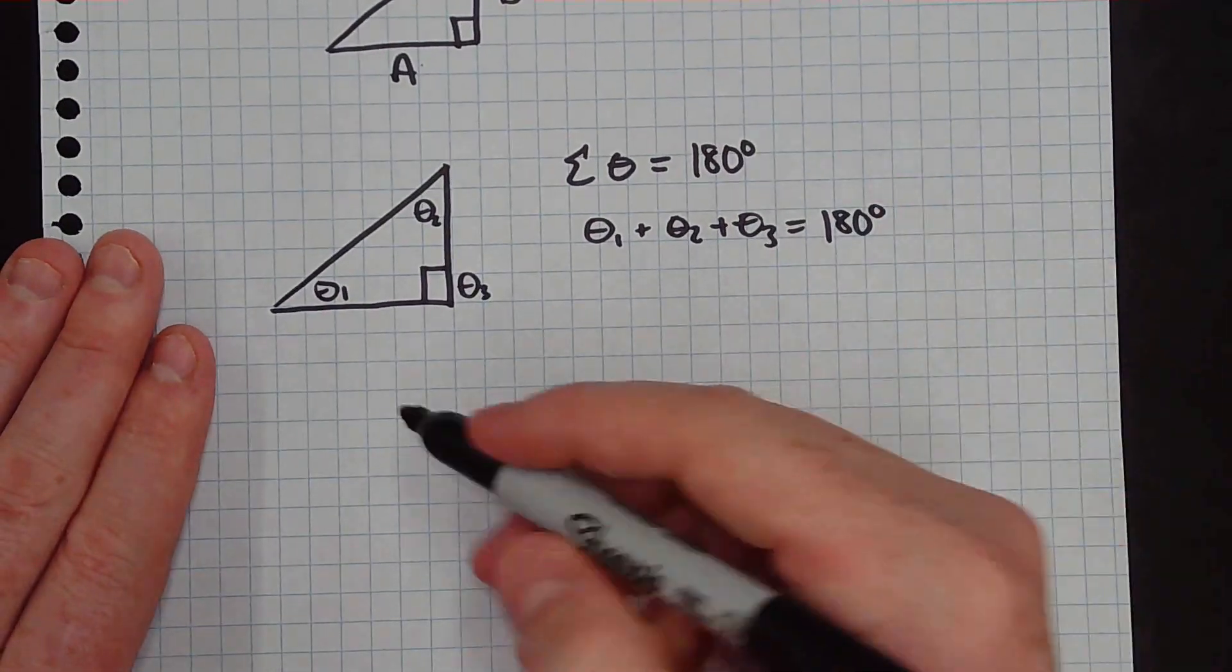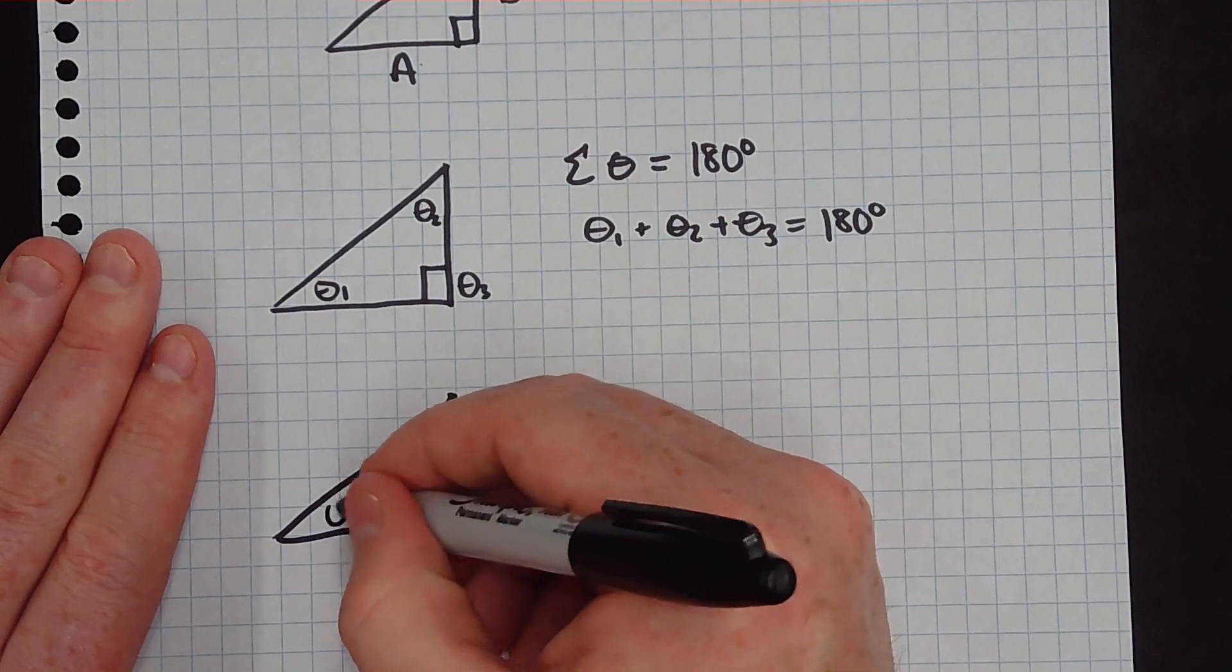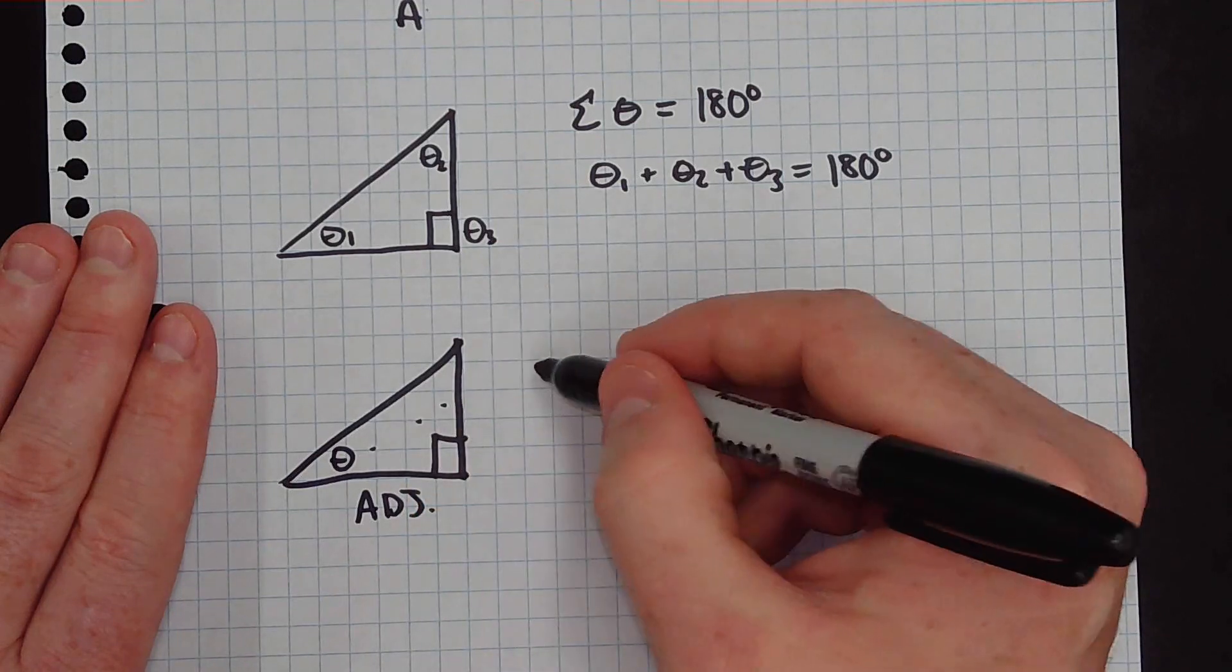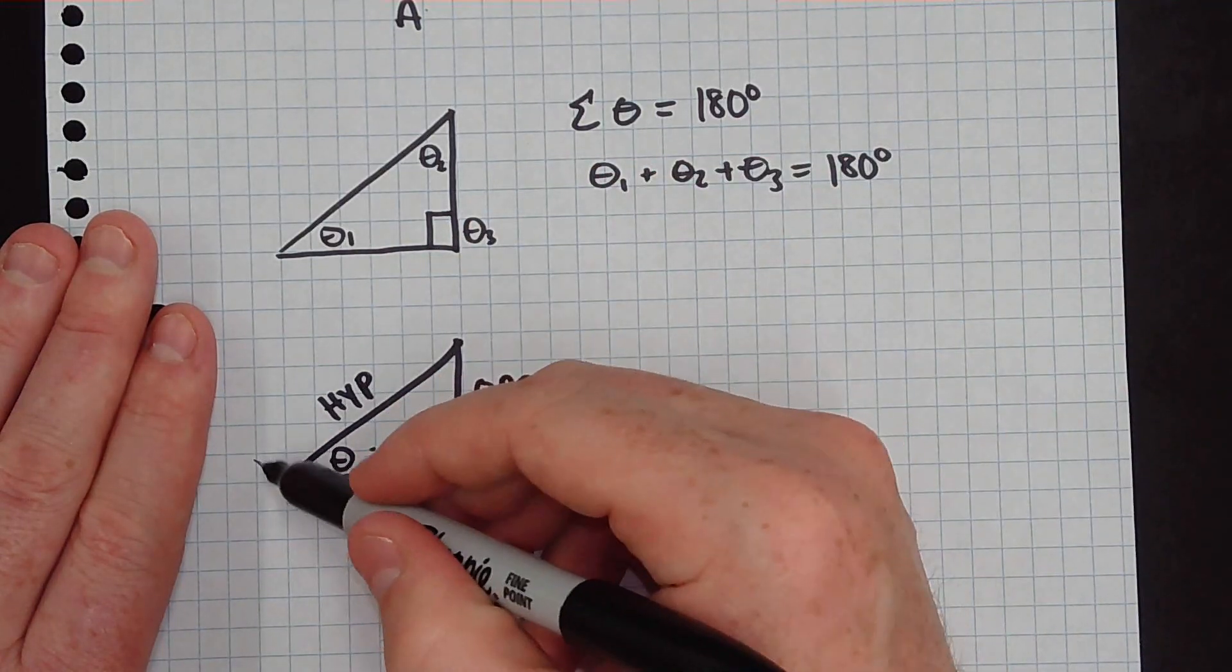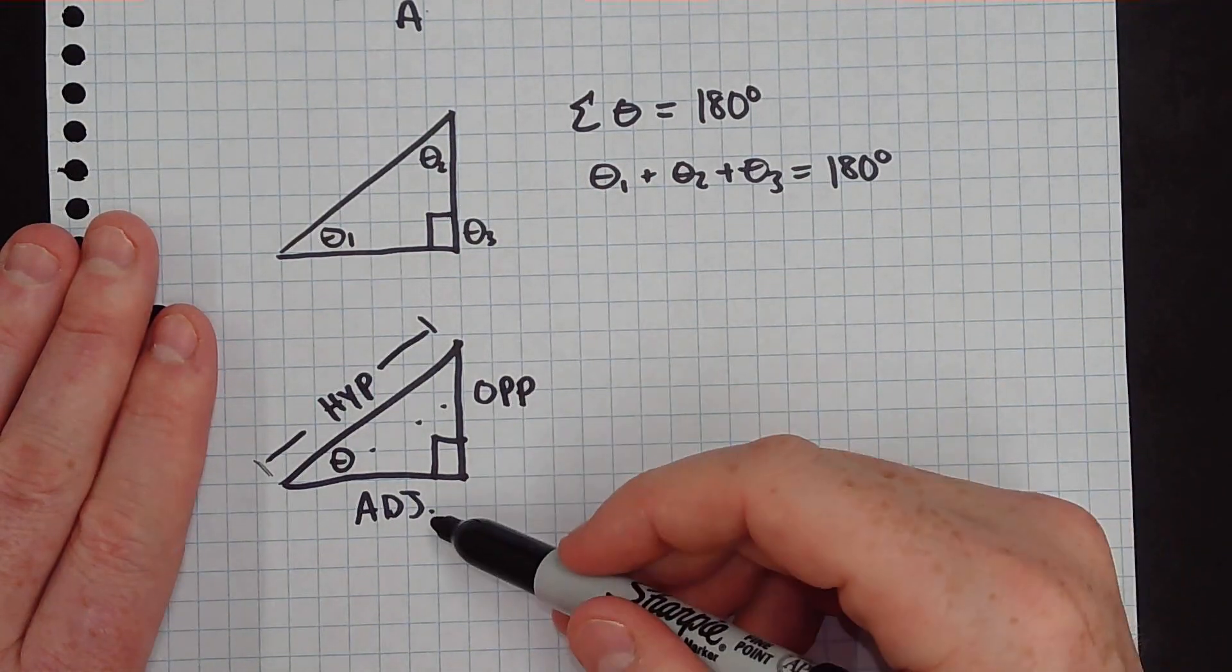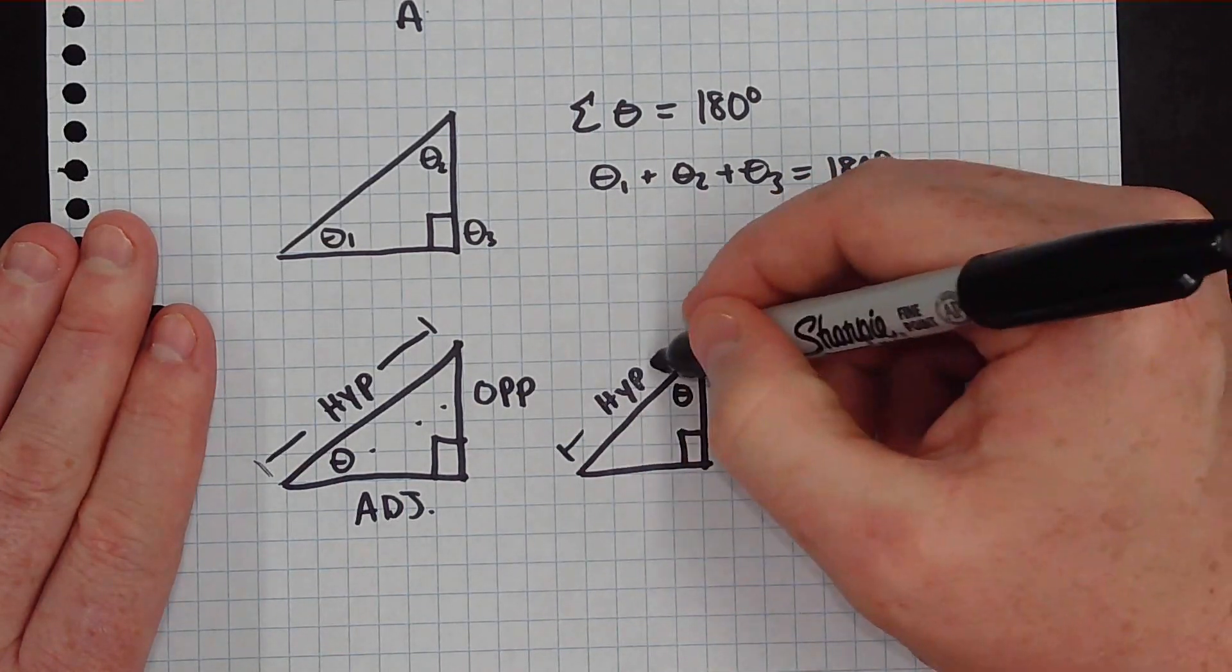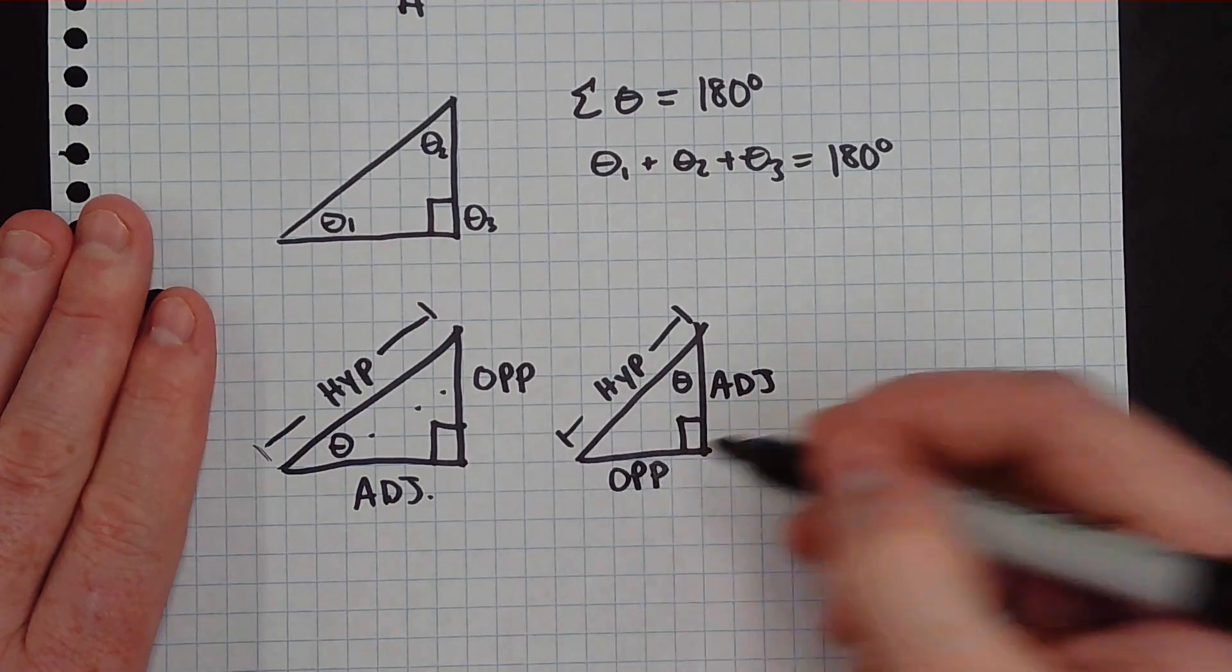Now, what we're going to do today is look at SOH-CAH-TOA and Trig a little more advanced. So in order to do this, let's say we have this angle here, we have to know the sides of the triangle. The side directly adjacent to this angle is called the adjacent side. The side that is directly opposite, we call that the opposite side. And this is called the hypotenuse. The hypotenuse is always the long side of your right triangle. A lot of students also forget this fact: the opposite and adjacent side may change, depending upon the problem or what angle you have.